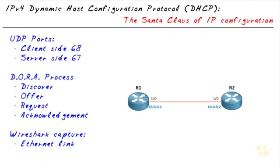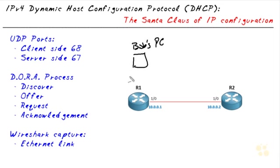Isn't it amazing how we take some things for granted? For example, DHCP, the dynamic host configuration protocol. A computer — for example, Bob's computer — when he boots it up in the morning, that computer is very likely asking for help, saying it would love to find a DHCP server that can hand it an IP address.